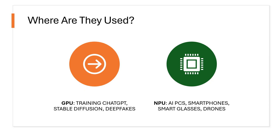Where do we use each? When you are running a huge AI model, use a GPU in the cloud. Want snappy AI on your phone or your laptop? Go to the NPU — it gets it done, both fast and power-efficient.